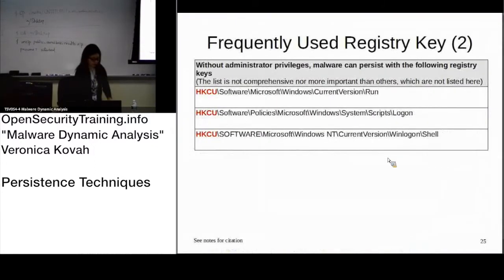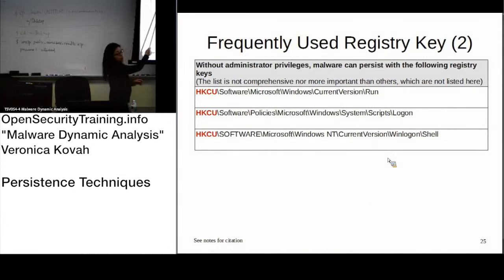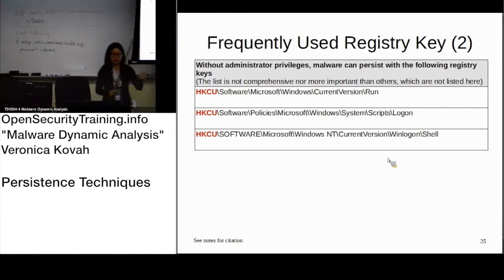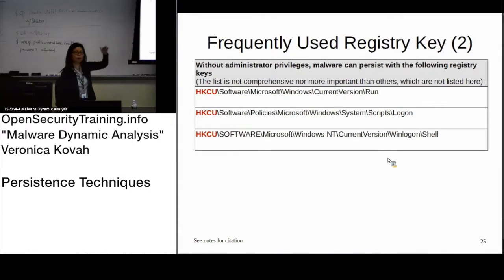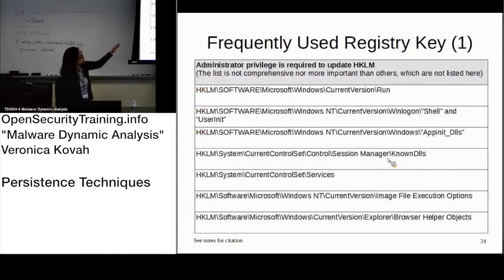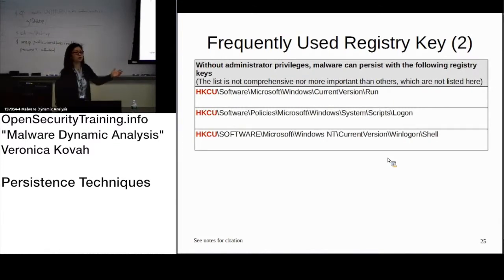Moving to slide 25 — I'll highlight this because we're now looking at the HKCU, or current user, registry keys. It has the same keys but they are specific to a certain user. There's a logon and logon shell here too, but this registry key can be changed by malware that has only user privilege, whereas the HKLM equivalent requires administrator privilege. For XP, most people ran as administrator, so malware could change anything. Windows 7 is better in that regard.